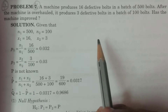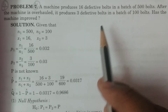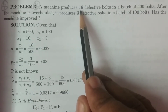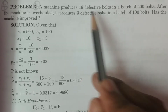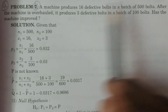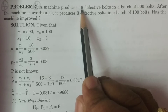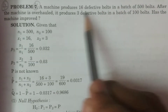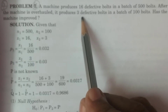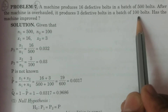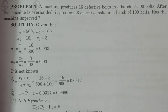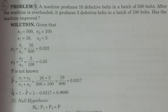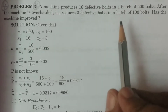We need to determine which particular test to use — proportion, mean, or standard deviation. It is clearly visible: 500 bolts are taken out of which 16 are defective, so x and n are given. It is a test of proportion. Similarly, 3 defective bolts occur in a batch of 100 bolts, so it is proportionate — defective bolts given in a sample. Therefore, it is a test for proportion.